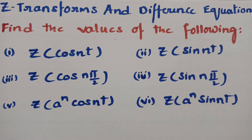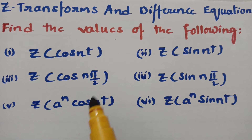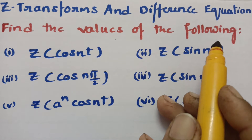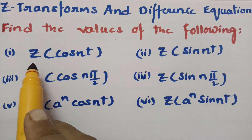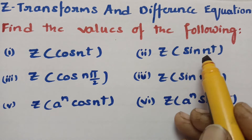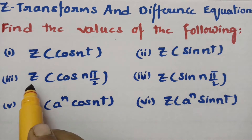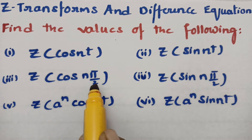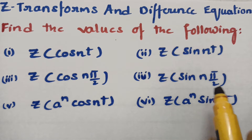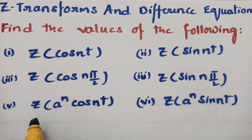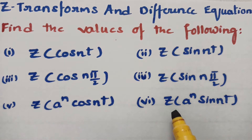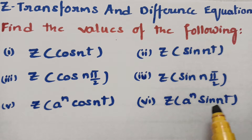In today's video, I am going to solve the most important problems using Z transforms. We have to find the values of: Z transform of cos(nt) and Z transform of sin(nt), next Z of cos(nπ/2) and Z of sin(nπ/2), and finally Z transform of a^n·cos(nt) and Z of a^n·sin(nt).